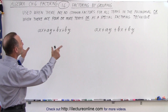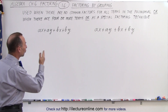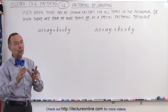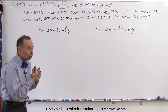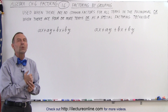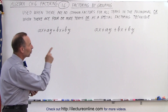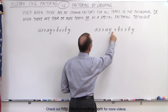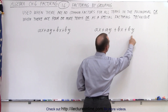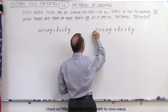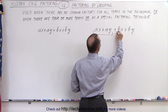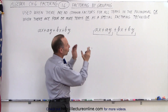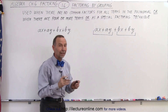Notice here we have the same polynomial — a polynomial of four terms — and we're going to solve it by grouping in two different ways. We do that to show you that there's sometimes not one specific way to do it. We're going to group the first two terms together and then group the next two terms together. It's not a bad idea to write little brackets below to show visually that we're grouping the first two terms and the last two terms.